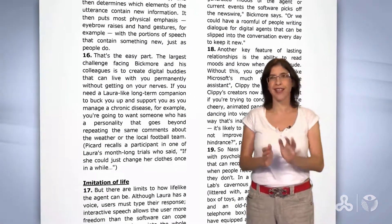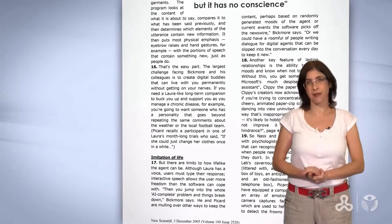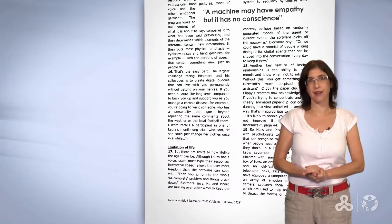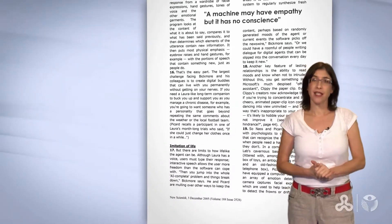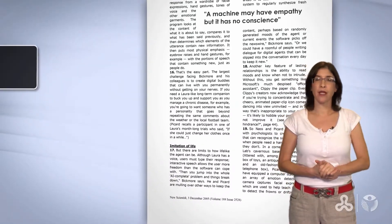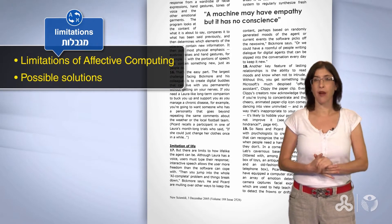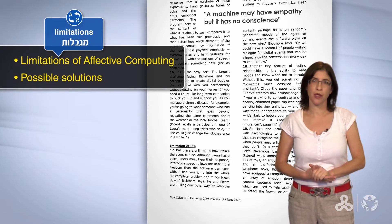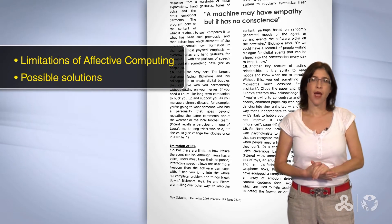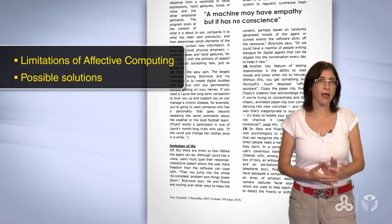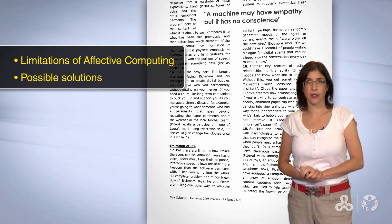In this lesson, we will read section 2 — the second part of the text. This section deals with the limitations of effective computing and possible solutions.